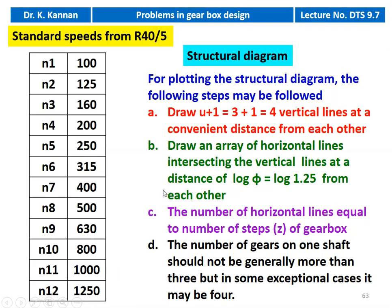We have to draw the structural diagram. For the structural diagram, we follow these steps: first, draw u plus 1, that is 3 plus 1 equals 4 vertical lines at a convenient distance from each other. Then draw an array of horizontal lines intersecting the vertical lines at a distance of log φ, that is log 1.25, from each other. Use a scale and pencil or graph sheet; use only an HB pencil, not pen or sketch pen.